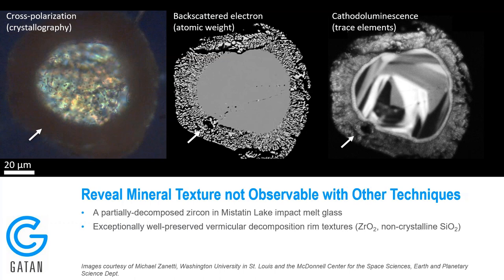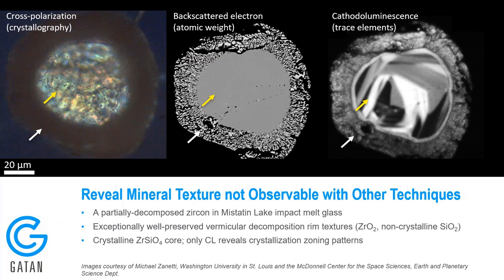The first example is a partially decomposed zircon — a natural-forming mineral that was in an impact crater and exposed to very high temperatures and pressures. The outer edge of the zircon grain has been decomposed, visible as a glassy rim appearing dark in cross-polarization. The backscattered electron image shows the decomposition is a mixture of phases. However, when we look at the cathodoluminescence information, we see huge amounts of detail at the grain interior that we simply don't see with these other typical analysis techniques used in the geosciences.